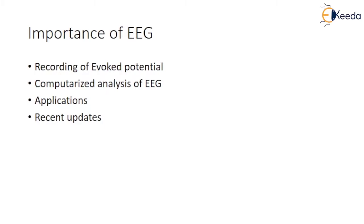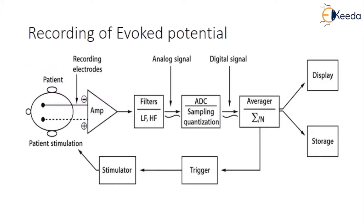Importance of EEG: The first one is recording of evoked potential, computerized analysis of EEG, applications and recent updates. Recording of evoked potential: If an external stimulus is applied to a sensory area of the brain, it responds by producing an electrical potential known as evoked potential.